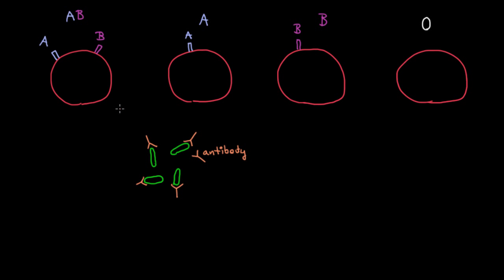What would happen if an antibody bound to a red blood cell? That would be a big problem because now this red blood cell would be marked for destruction the same way that bacteria were. Some white blood cell would come along and try to destroy this red blood cell. And if you had antibodies binding to all your red blood cells, you'd lose a lot of red blood cells — your immune system would be way over-activated and there's a good chance that you would die.